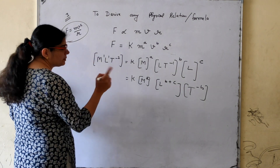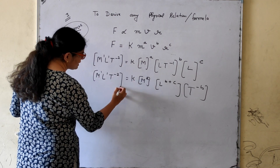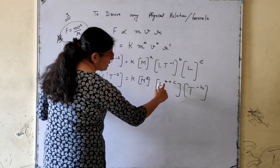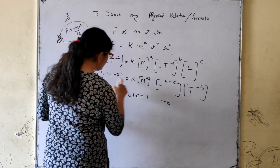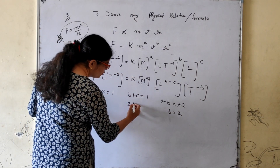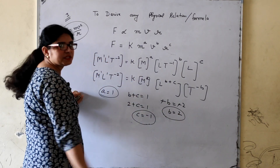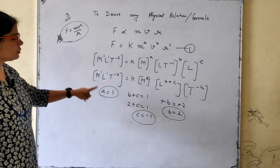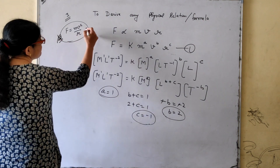Since if the base is the same, the powers must be equal. Comparing M: a = 1. Comparing L: b + c = 1. Comparing T: −b = −2, so b = 2. Substituting b = 2 into b + c = 1 gives 2 + c = 1, so c = −1. We now have all three values: a = 1, b = 2, c = −1.